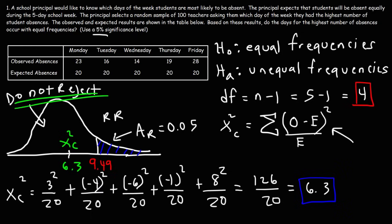So therefore, we're going to accept the null hypothesis that the data is the days of the highest number of absences occur with relatively equal frequencies. So this variation is not enough or not significant to reject the null hypothesis.